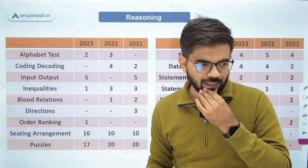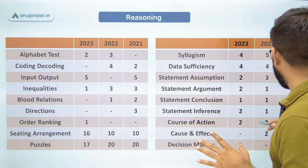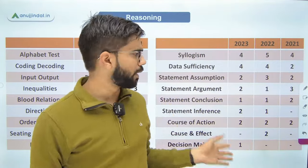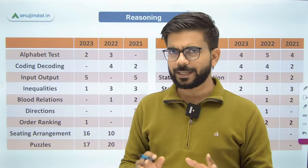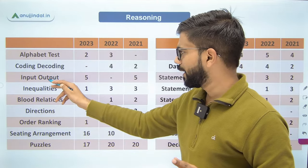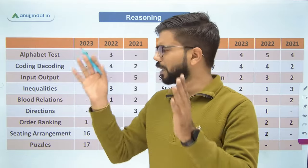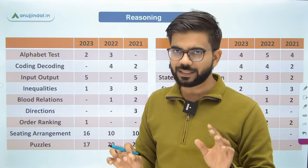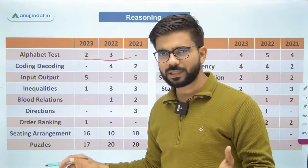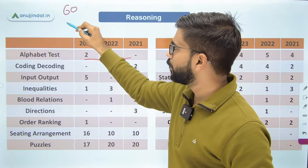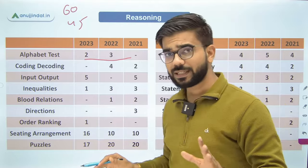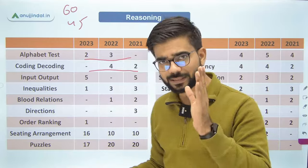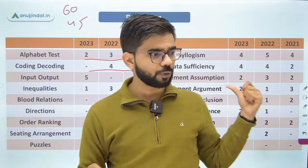The next section is Reasoning. Similarly, I have taken 3 years of data: 2021, 2022, 2023. This is the entire syllabus of Reasoning — around 18-19 topics. In RBI Grade B, Reasoning has 60 questions and you get 45 minutes. The level is quite high. Non-verbal reasoning is not asked in RBI. Starting with alphabet test, coding-decoding, input-output, and inequalities — these are all part of verbal and logical reasoning. Alphabet test generally has 2-3 questions.